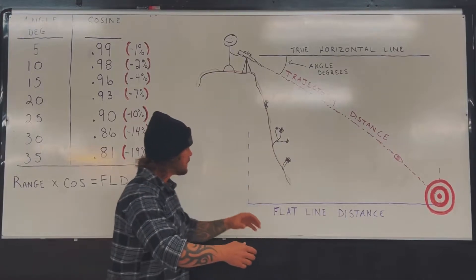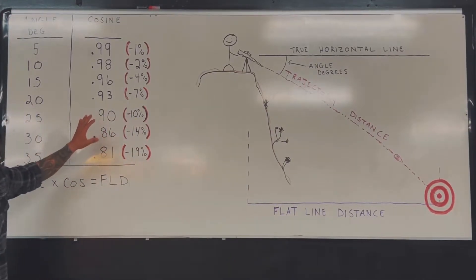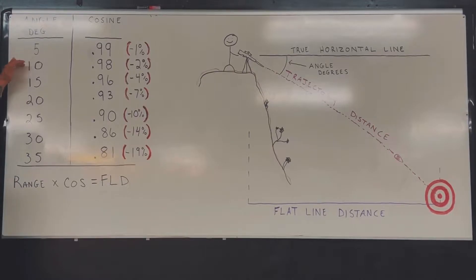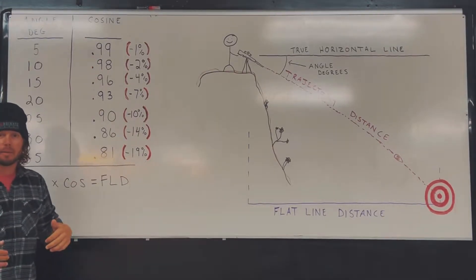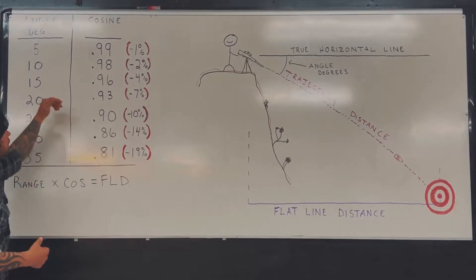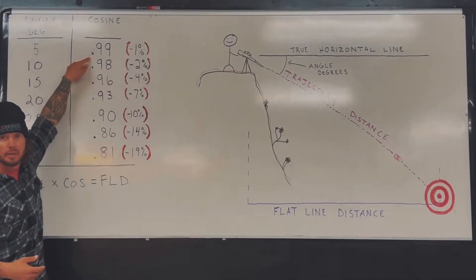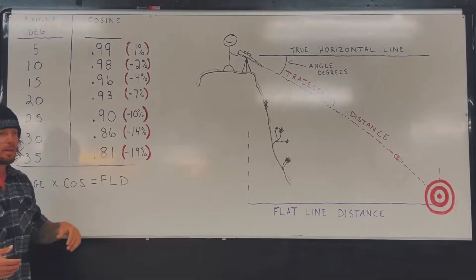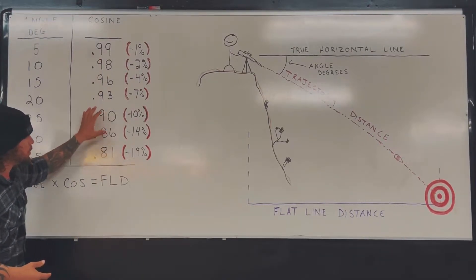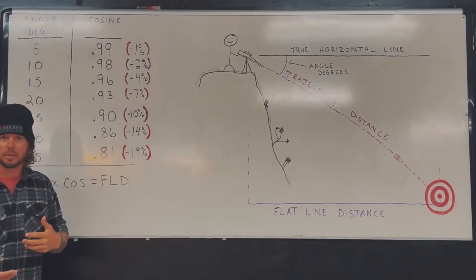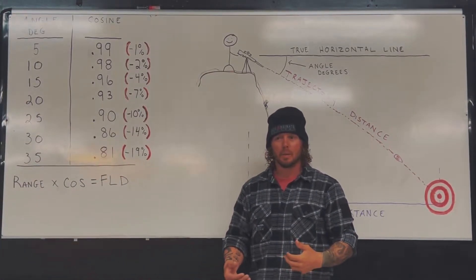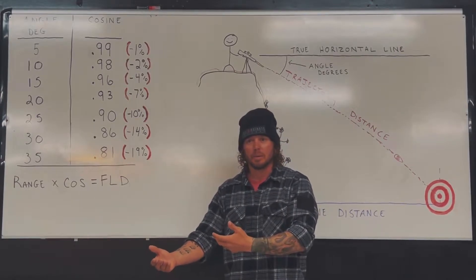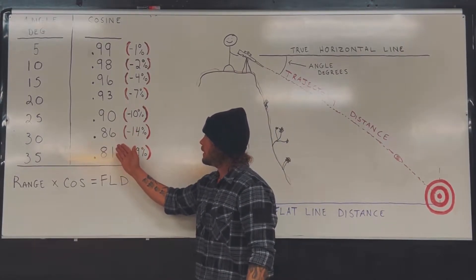So you look at the cosine chart. You've got your angles here: 5, 10, 15. Notice that the relative cosine for each one of these angles - at 5 degrees you've got 0.99. So I want you to look at your cosines as a percentage. Anytime we're trying to find a percentage to a specific number, we always multiply by a decimal. Well, it's no different here.